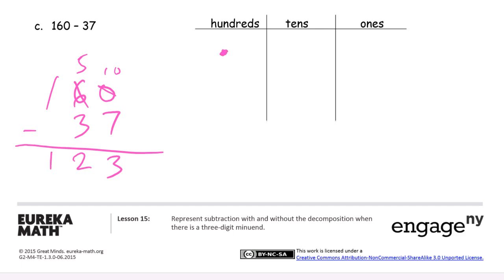And our minuend is 100, 1, 2, 3, 4, 5, 6 tens. We don't have any ones in our minuend. That's why we have to break up one of the tens. 1, 2, 3, 4, 5, 6, 7, 8, 9, 10. Now we can cross out 7 ones and 3 tens. And we have 100 and 2 tens left and 3 ones. 123.